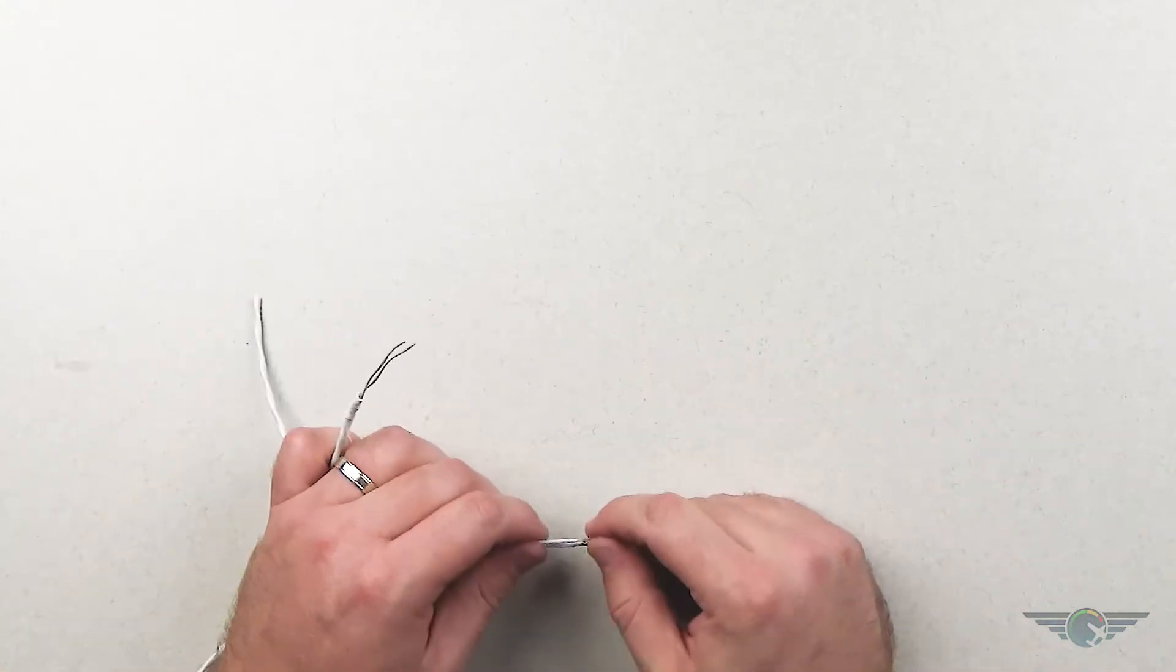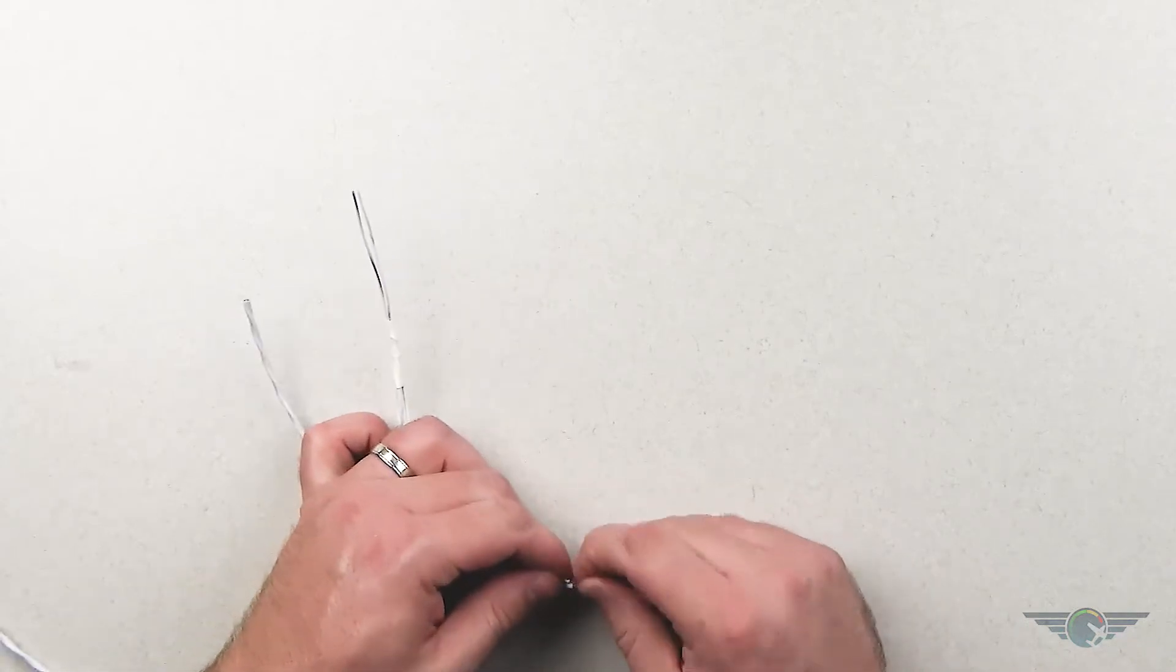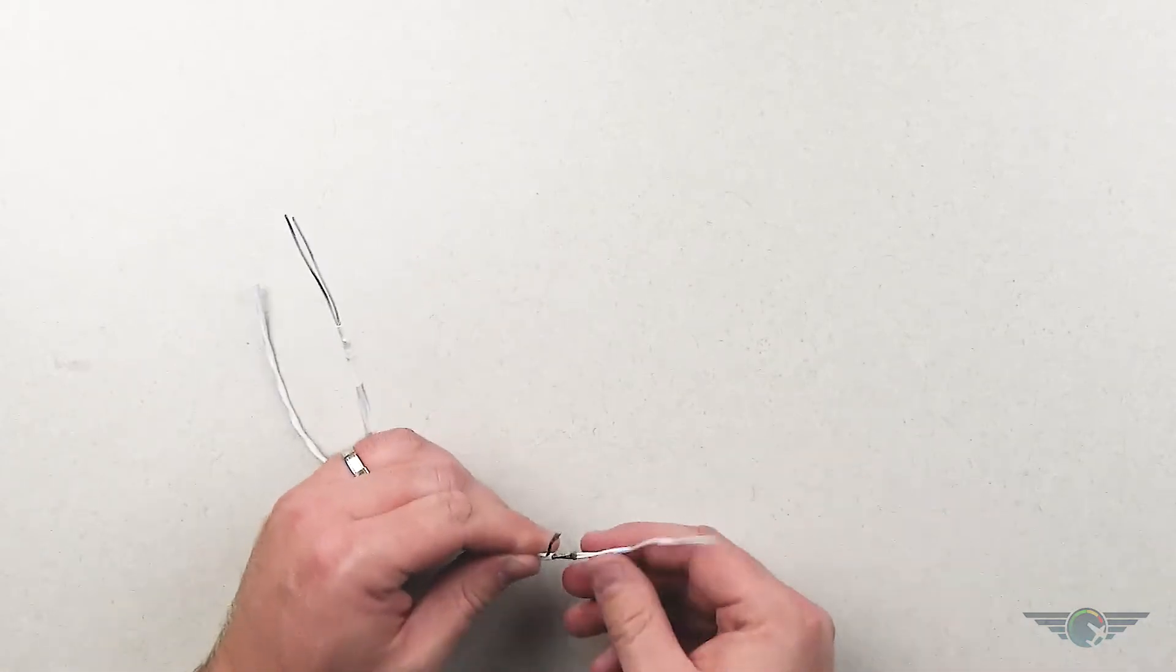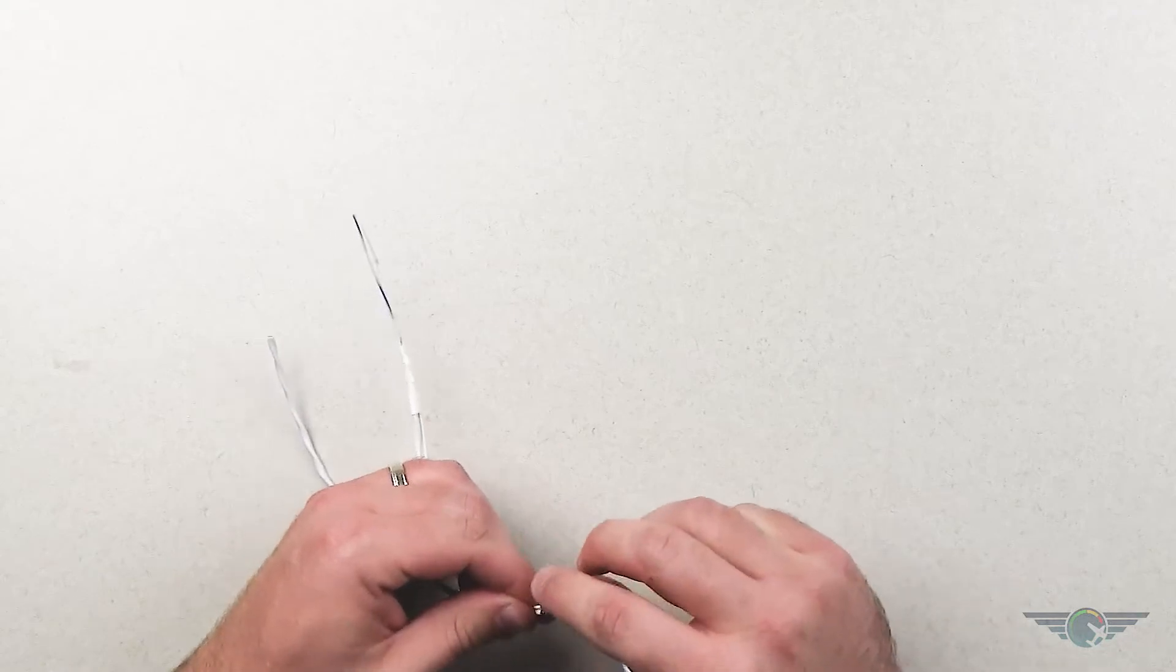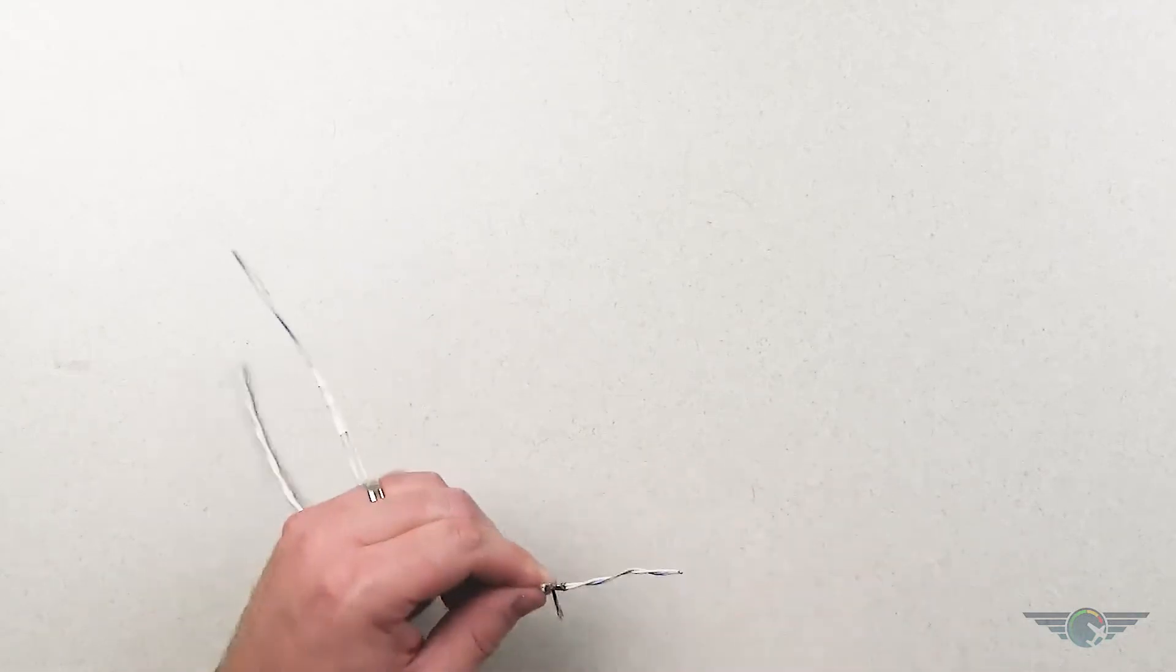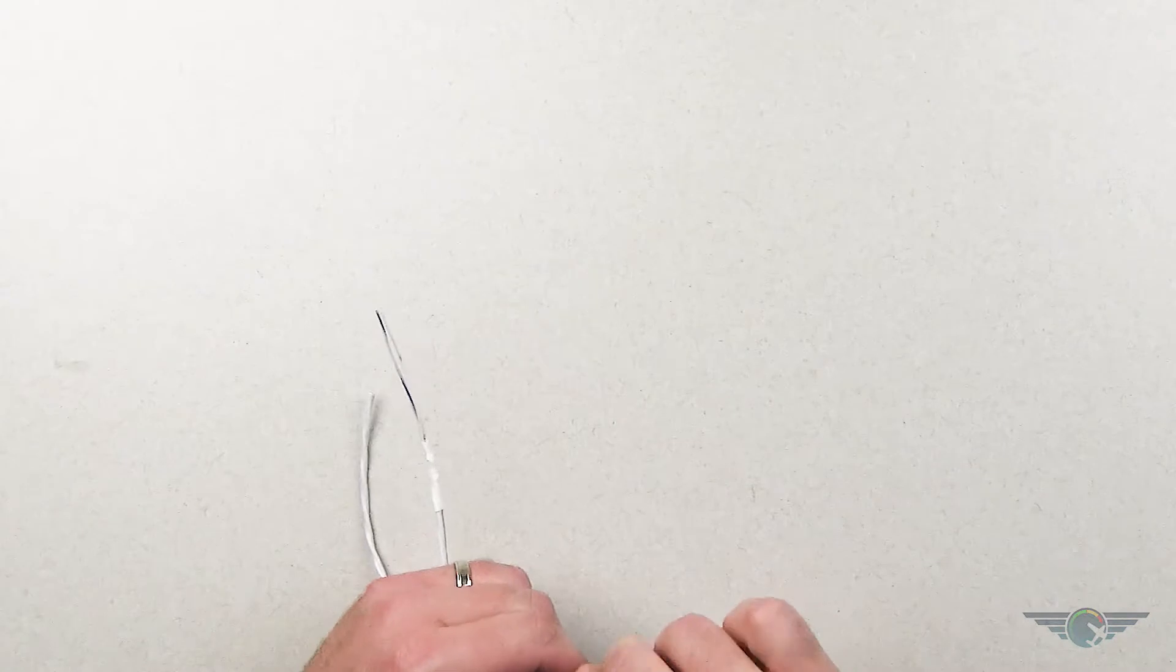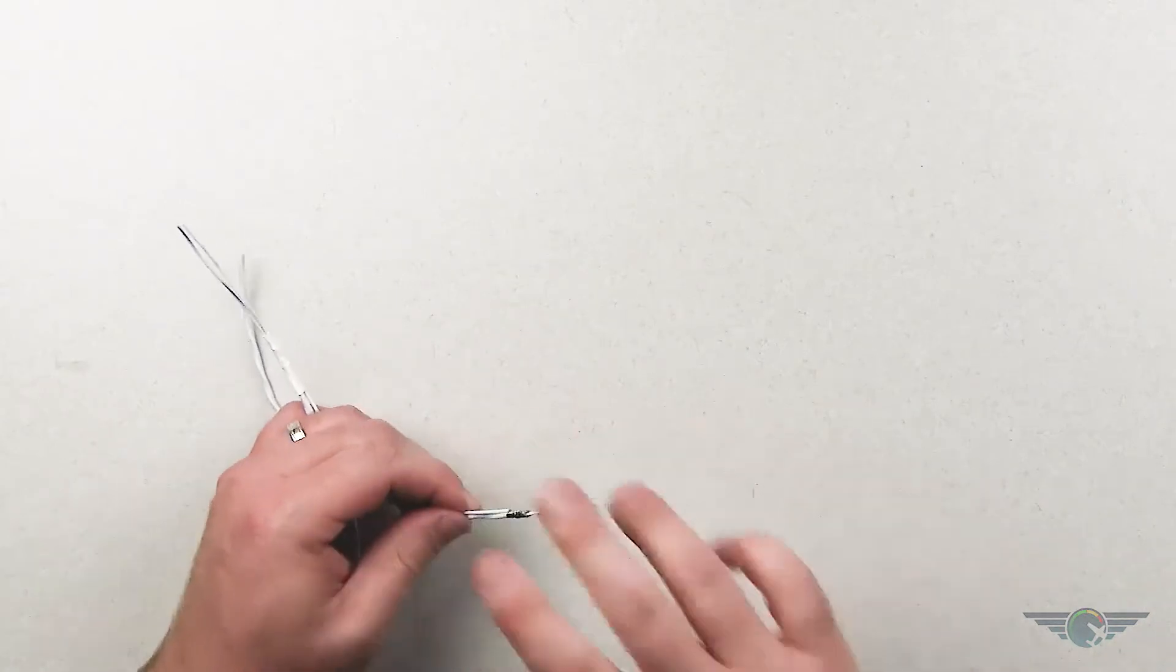And then again, we match insulation to insulation, and we turn our wire 90 degrees there. So insulation to insulation, wire's turned 90 degrees, and I'm going to wrap that wire around. So there we go, wrapping it around. And get that good mechanical termination.